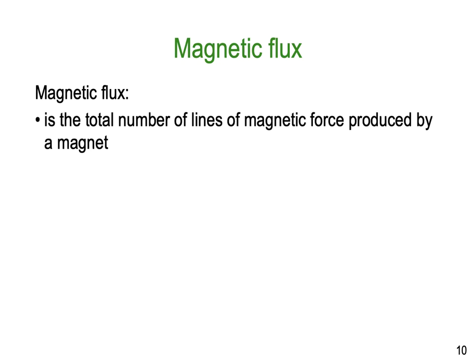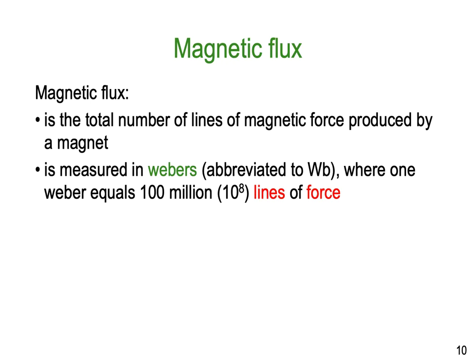Magnetic flux is the total number of lines of magnetic force produced by a magnet. It's measured in Webers, after Mr. Weber, abbreviated capital W small b. One Weber equals 100 million lines of force — that's times ten to the power of eight. It's known by the symbol phi (φ), which is sometimes also used for measuring angles, but here we use phi to indicate Webers or the number of lines of magnetic force.